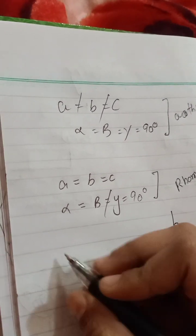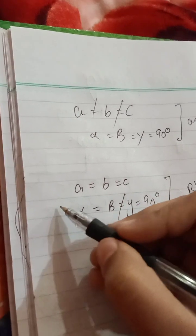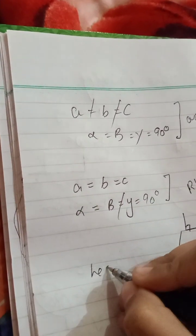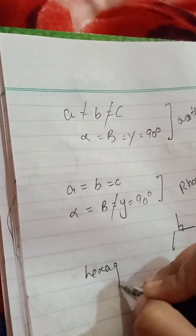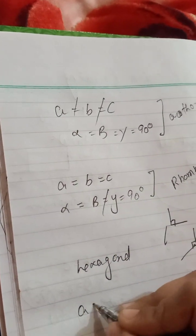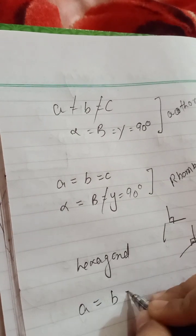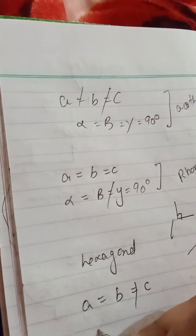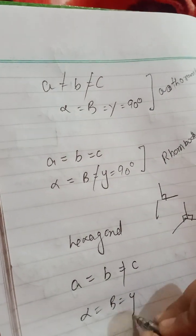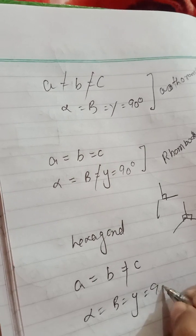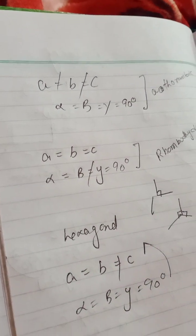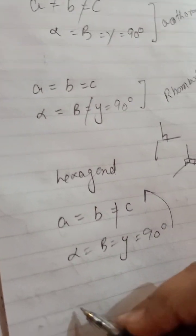The fifth one is hexagonal structure: when a = b ≠ c and alpha = beta = 90° but gamma = 120°, the hexagonal structure will be formed.